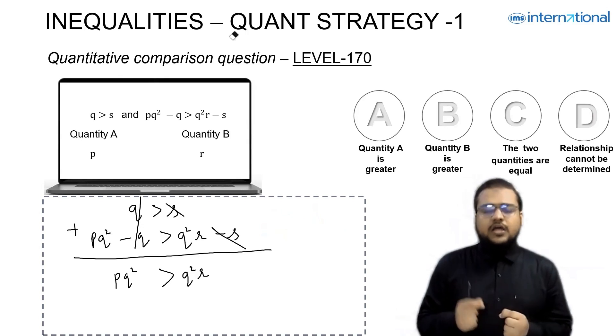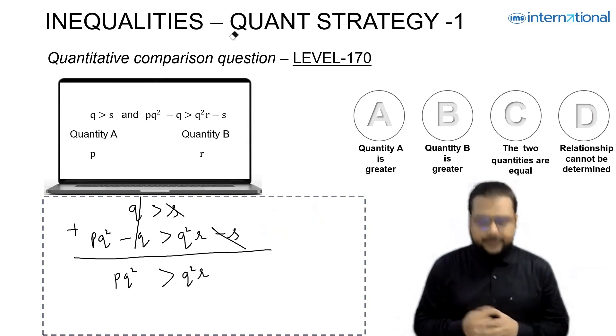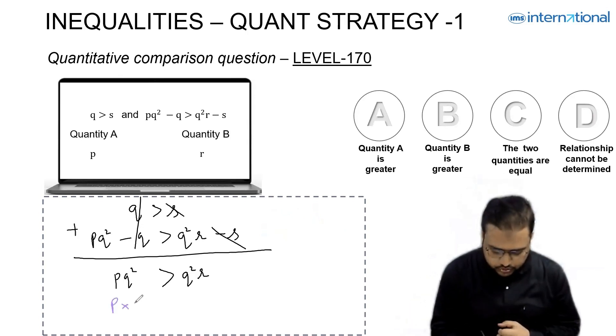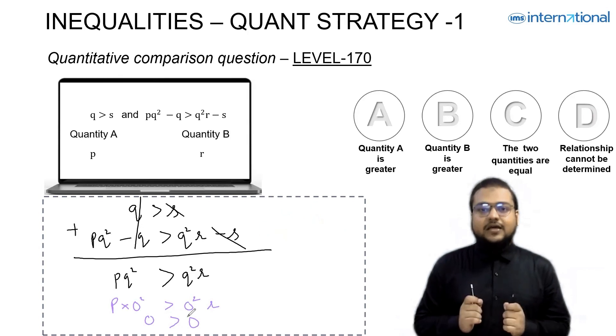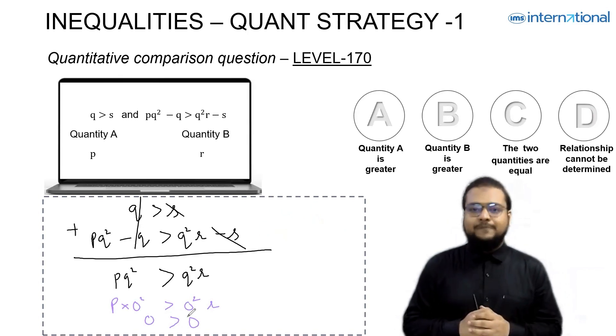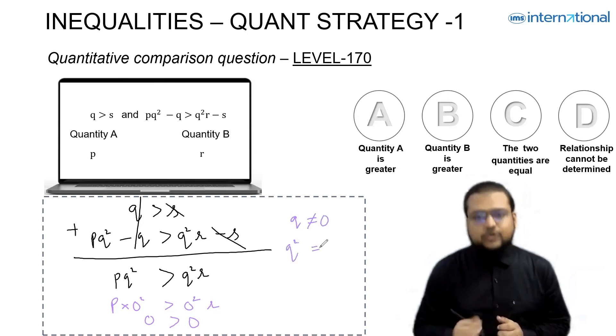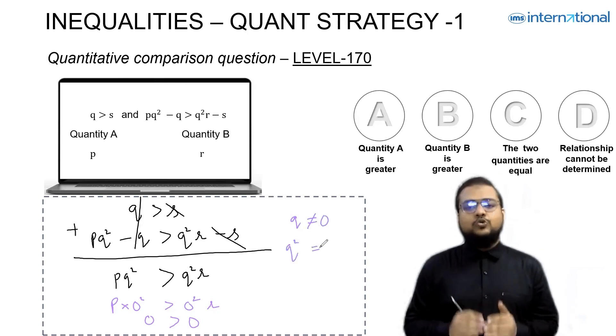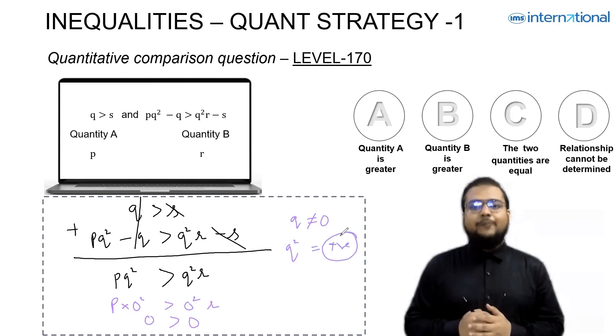But let me check if I plug in Q equal to zero, will the inequality be satisfied? P into zero squared greater than zero squared into R, zero greater than zero. That's a little odd. That means here, Q cannot be zero. Now tell me if Q cannot be zero, then what can you conclude about Q²? Can I say that Q² will be only a positive number? A positive number.